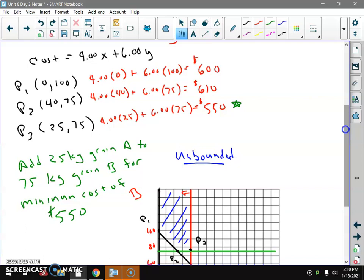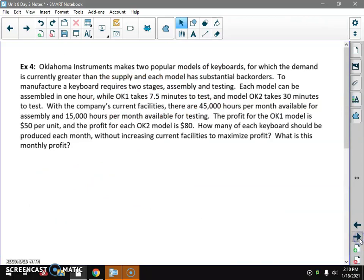Now I'm going to answer the question that says: add 25 kilograms grain A to 75 kilograms grain B for a min cost of $550. All right, got that one done pretty good. About six and a half minutes into our video. Let's do our last one of day three.